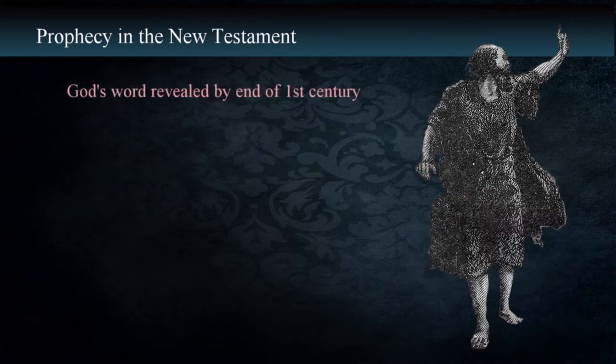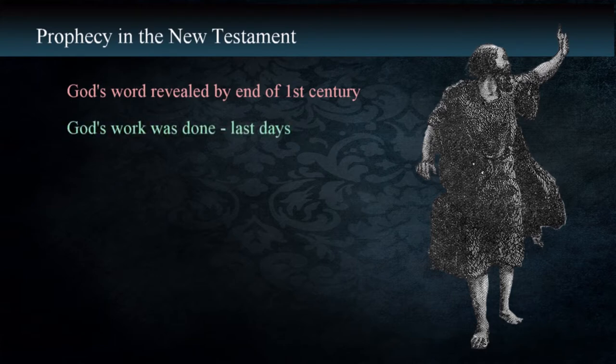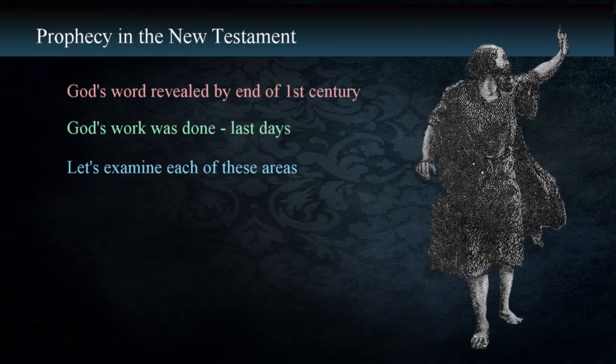By the end of the first century, God's word had been revealed and statements in the New Testament indicated that the revelation was complete. God's work was done, and as I've pointed out in previous lessons, we're living in the last days. Let's take a look at each of these areas so we have a better understanding of them.